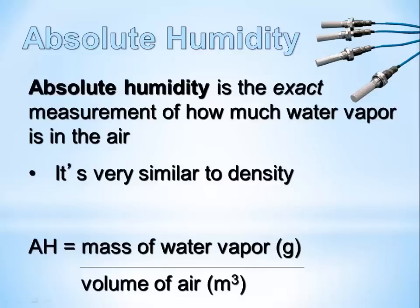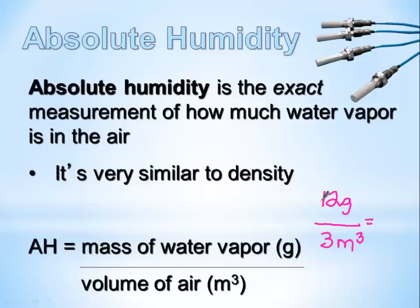Let's take a look at a quick example of calculating absolute humidity. Let's say we have 12 grams of water vapor evaporated into three cubic meters of air. We take our mass — 12 grams — divided by our volume — three cubic meters. That gives us an absolute humidity of four grams per cubic meter. Pretty simple and straightforward, and it has a lot to do with density and concentration.